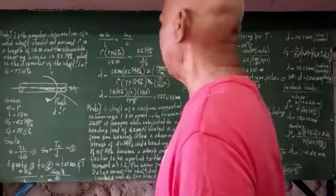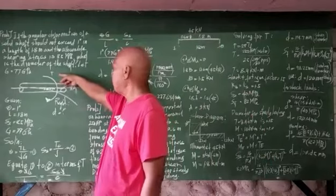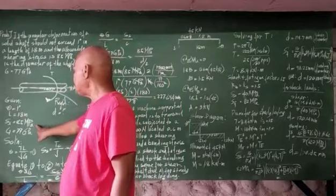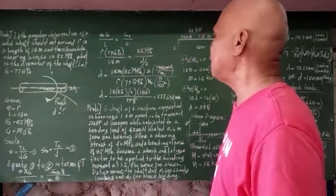We have here the diagram which is subjected to a twisting moment, and our theta is limited to 1 degree. The length is 1.8 meters. The shear stress Ss is equal to 85 mega Pascal, and G is equal to 77 giga Pascal.